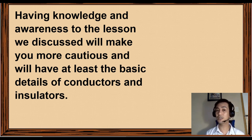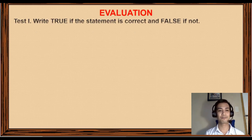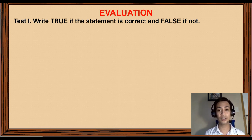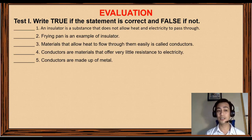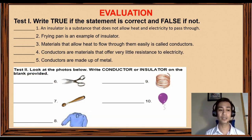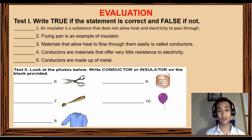For the evaluation, test one: write 'True' if the statement is correct and 'False' if not. Make sure to answer all items — pause the video while copying and answering, then take a picture of your answers and send it to my messenger. Test two: look at the photo below and write 'conductor' or 'insulator' on the blank provided. Take a photo of the question and your answers and send it to my messenger.